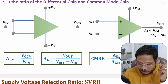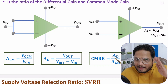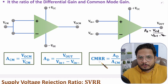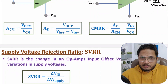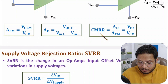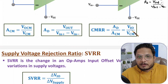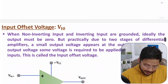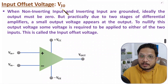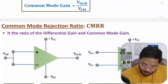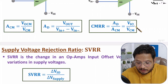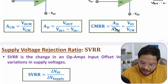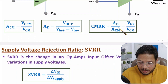Practically differential gain has some finite value, but ideally it should be infinite. So CMRR should be as high as possible. In competitive examinations, you may need to calculate CMRR based on other parameters like VIO, which is input offset voltage. Common mode rejection ratio can also be calculated as input offset voltage divided by common mode voltage, though usually we calculate it as differential gain divided by common mode gain.